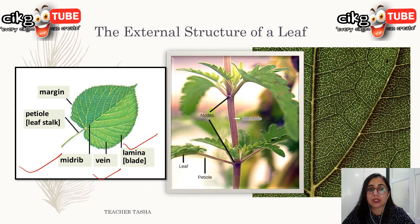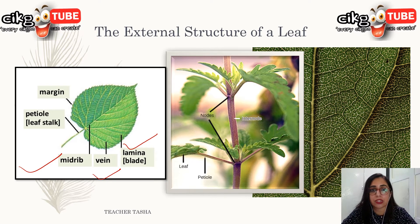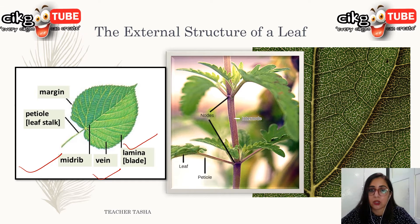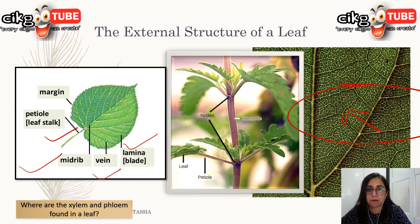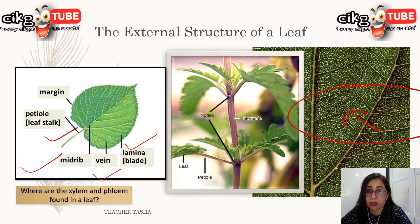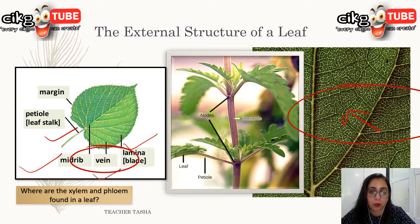The petiole is the leaf stalk that connects the lamina to the stem of the plant. The petiole stretches out into the lamina, producing a network of midrib and veins. Looking at a clearer picture of a leaf, you can see the petiole, lamina, veins, and midrib. The xylem and phloem are found in the veins.